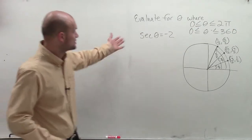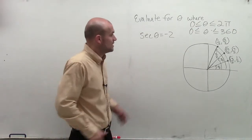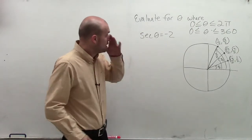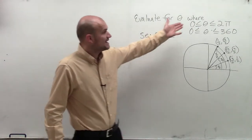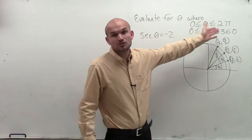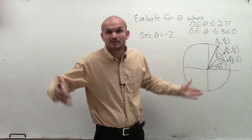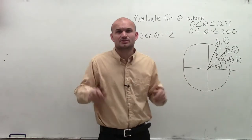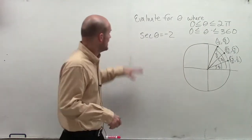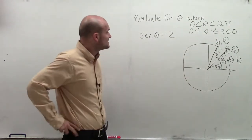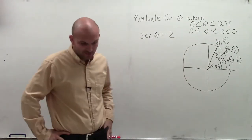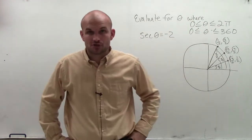Welcome. What I want to do is show you how to evaluate for theta, where theta has to be between 0 and 2π, or 0 and 360 degrees. We're going to deal with just radians, and we're given secant of theta equals negative 2.